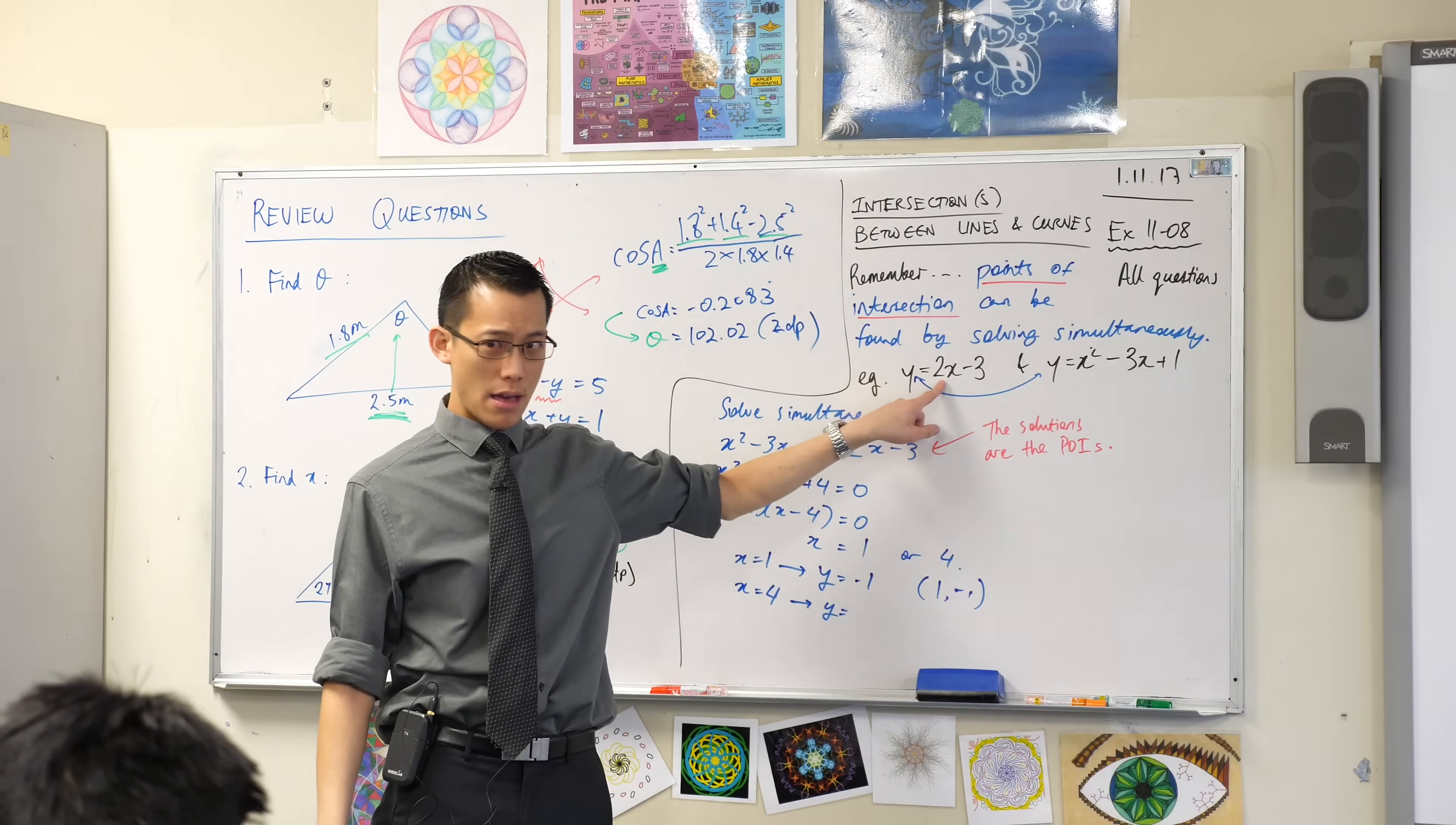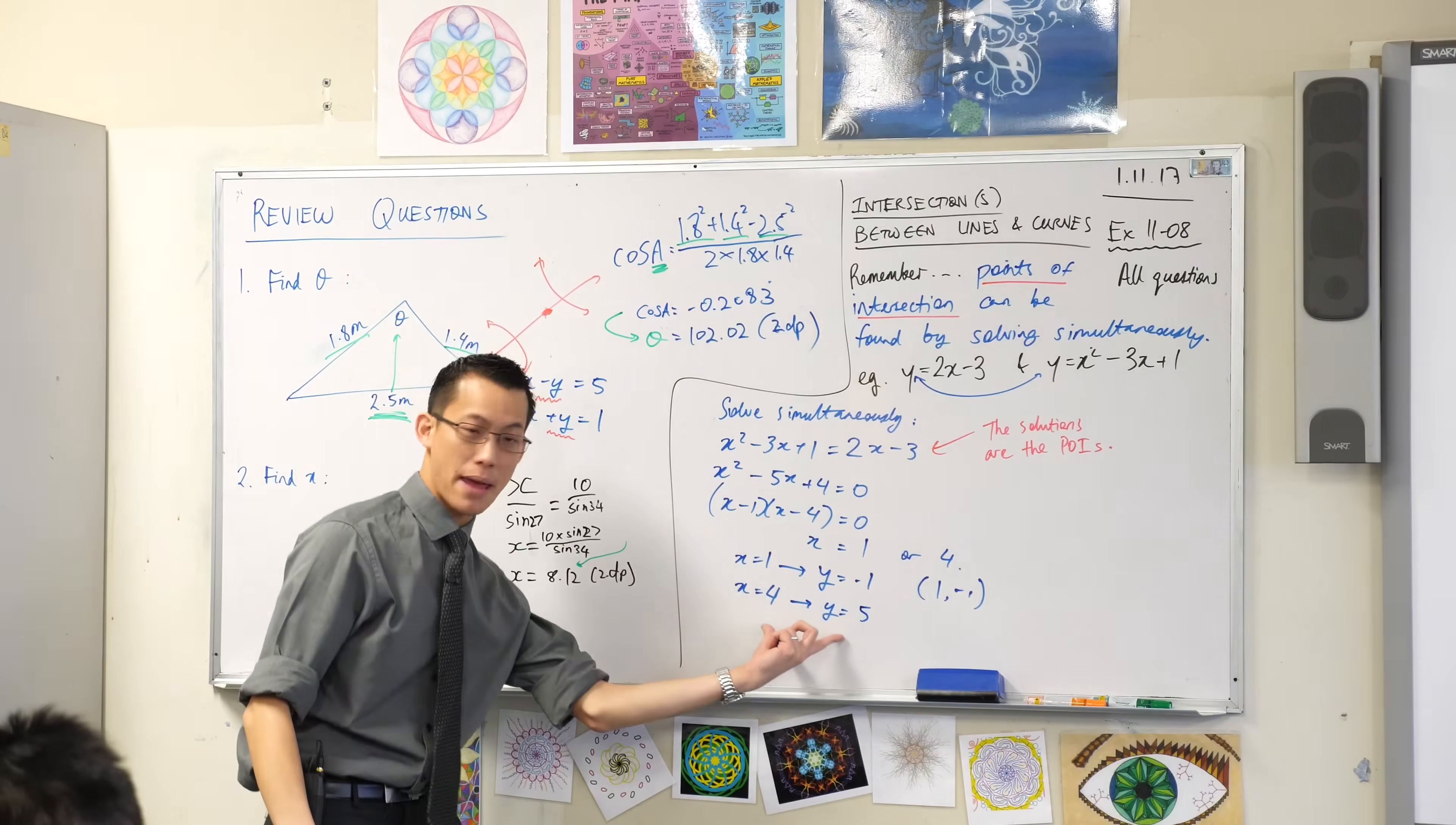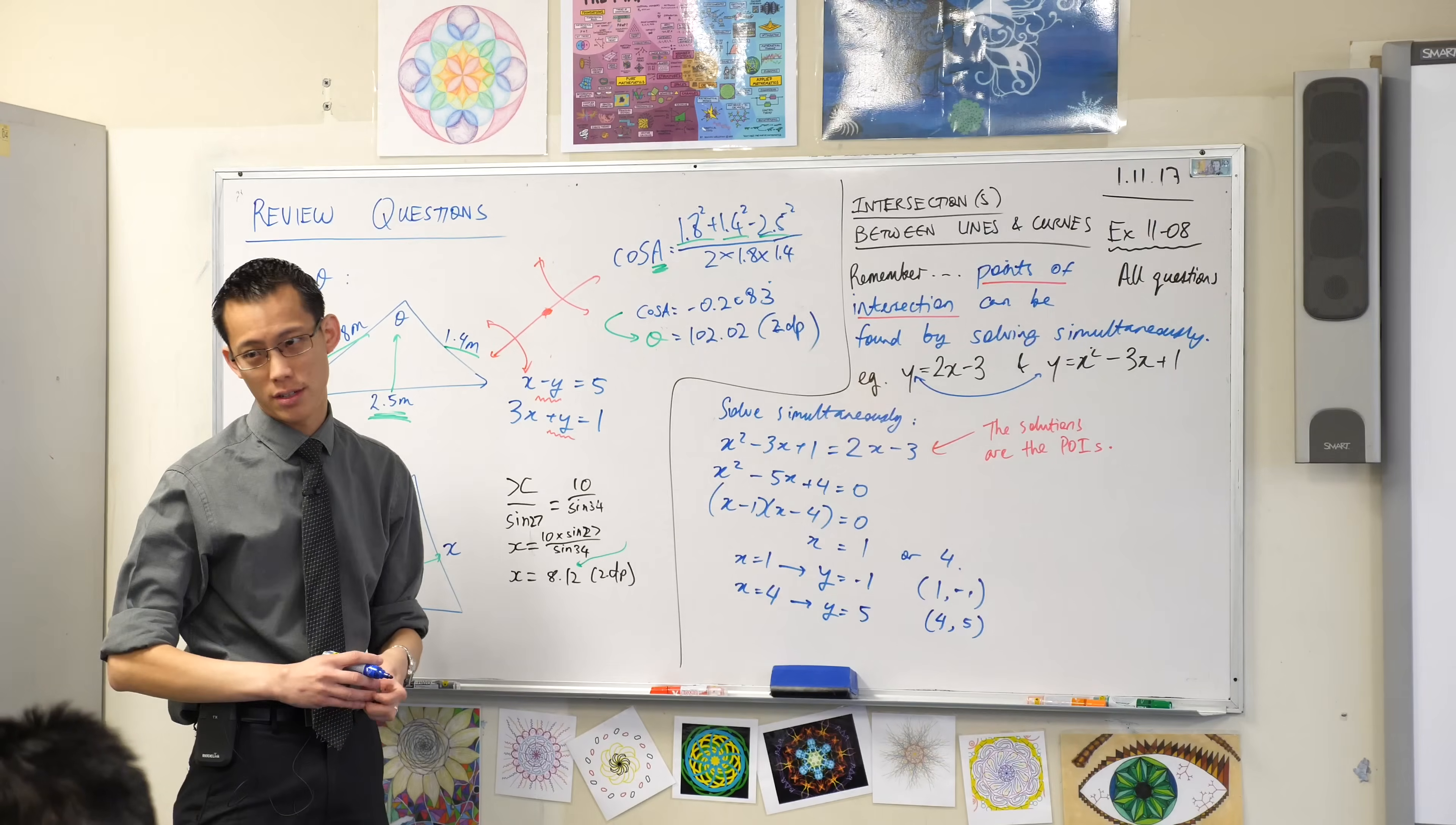x equals 4, so this will be 8 minus 3, which is 5. So again, that pair of numbers is a point. So its coordinates are 4, 5. Those are my points of intersection.